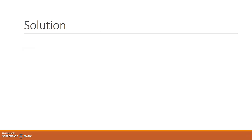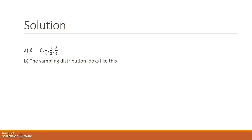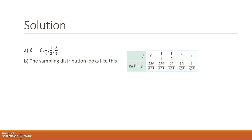Let's look at the solution. P-hat should take the following values: 0, 1/4, 1/2, 3/4, and 1. Your sampling distribution should look like this. You'll notice the values for P-hat are given as exact values. If you used decimal values, that's okay, but make sure your decimal values align with these exact values.